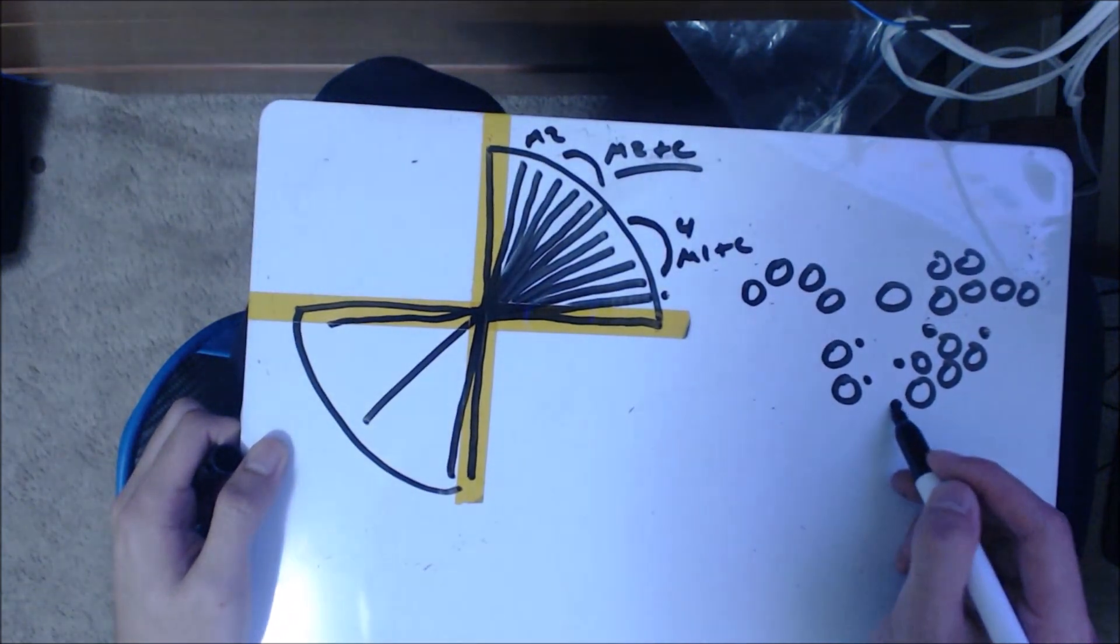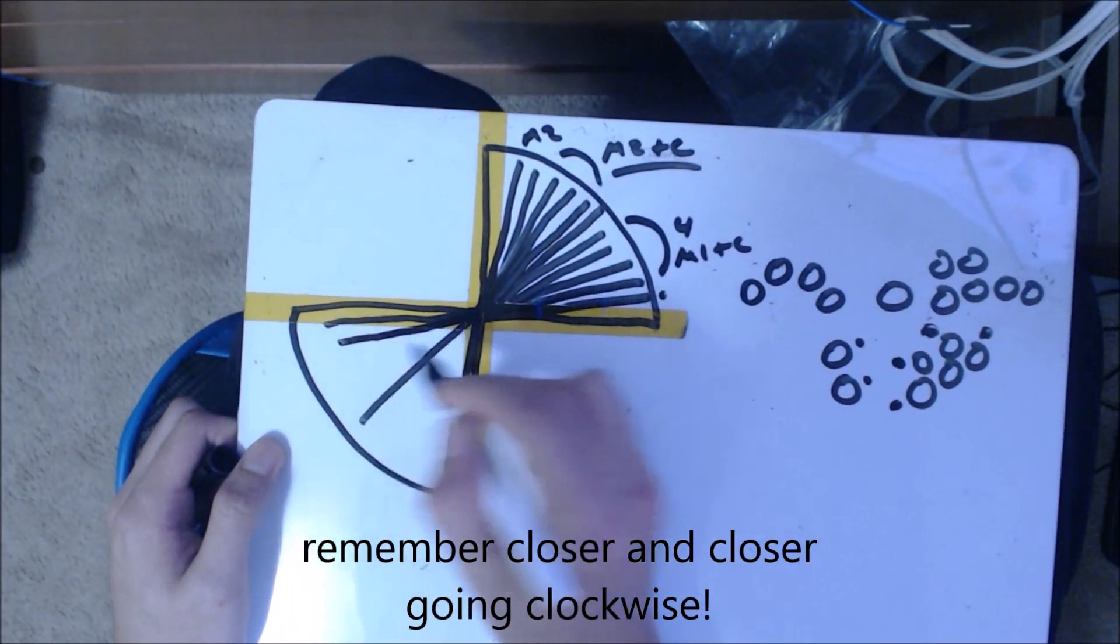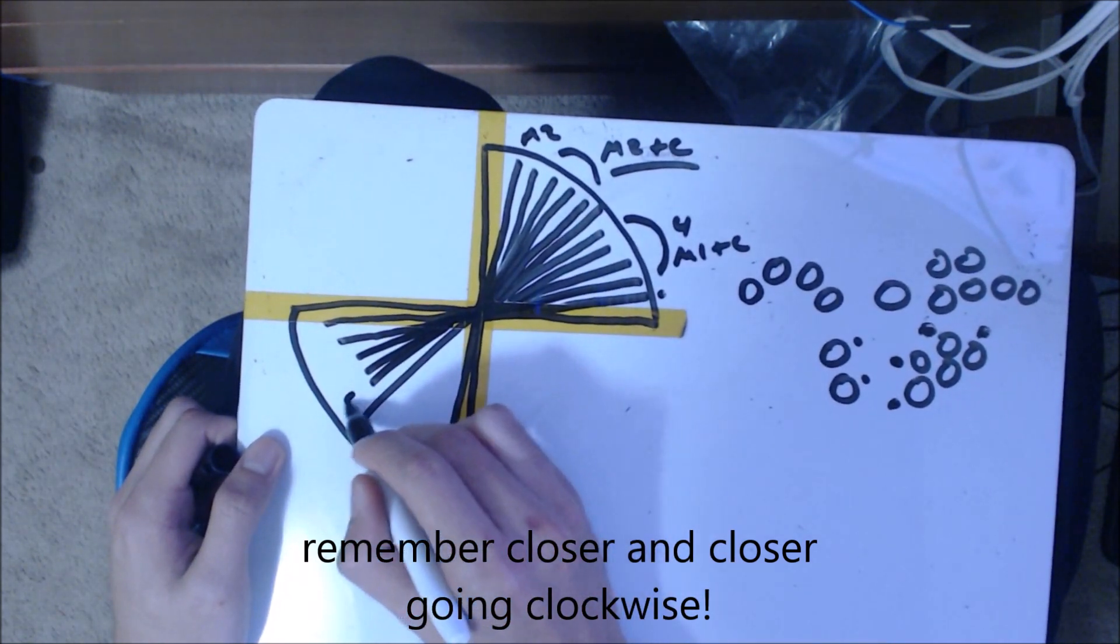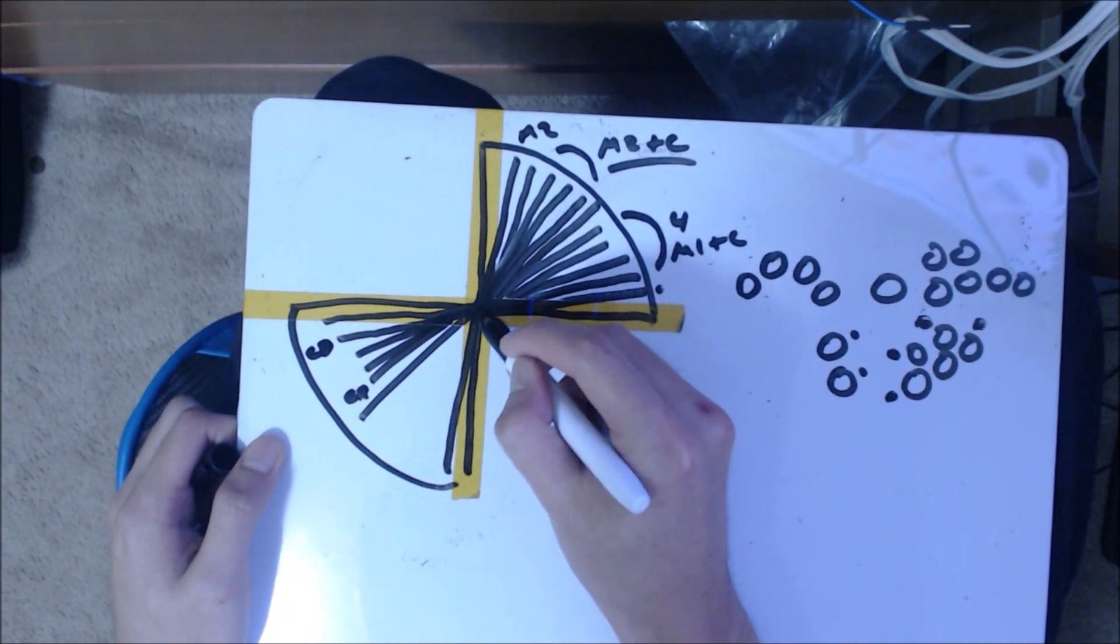The C buttons will slowly get you closer and closer, starting with C-down and going all the way to C-right. So this would be C-right and this would be C-down. Same for M2.